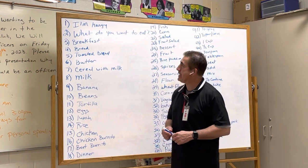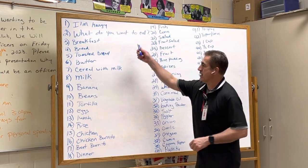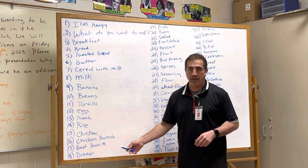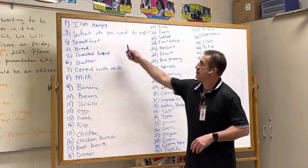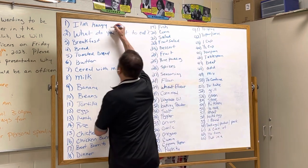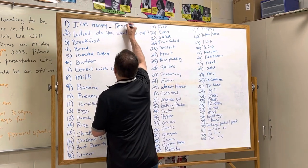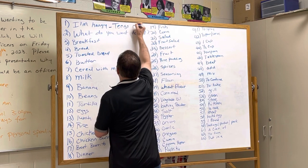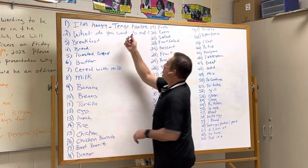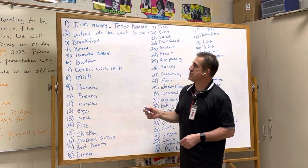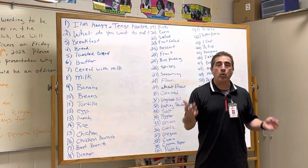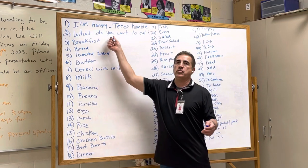Let's translate this row. 'I'm hungry' is tengo hambre. Remember that the H is silent — this you should already know. What do you want to eat?